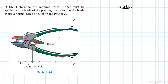We're going to dismantle the pruning shear and identify the members useful for determining P. We'll use the members outlined in red, green, and black. I'll start by drawing the free body diagram.